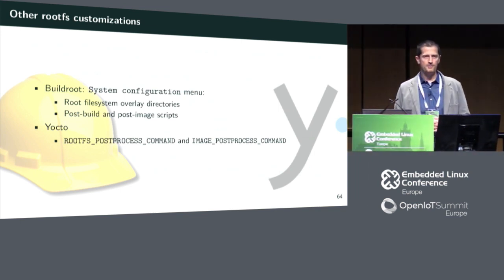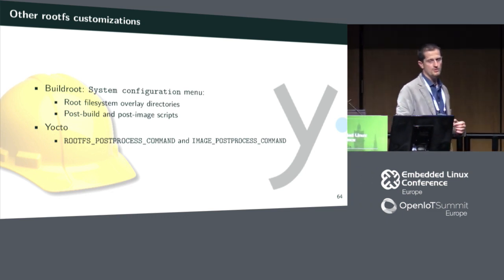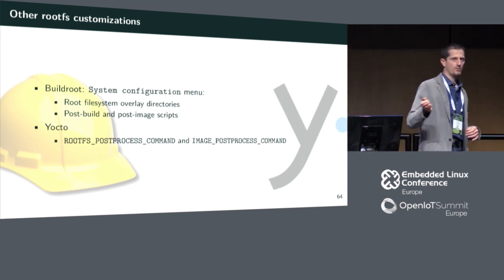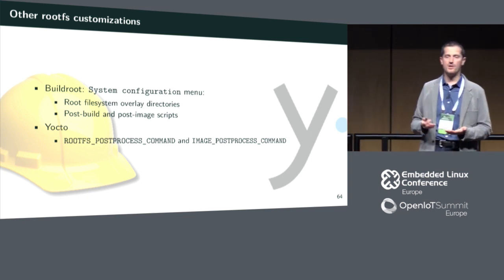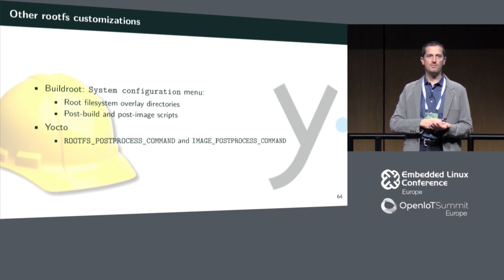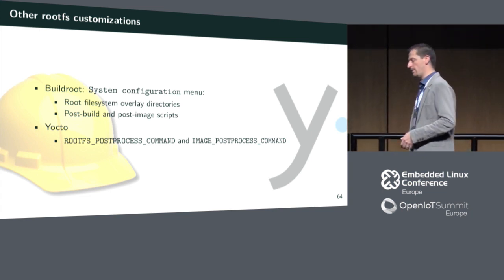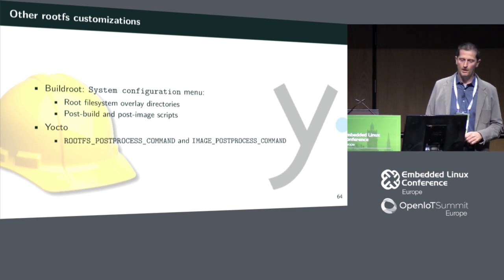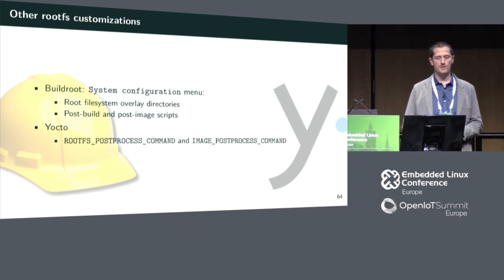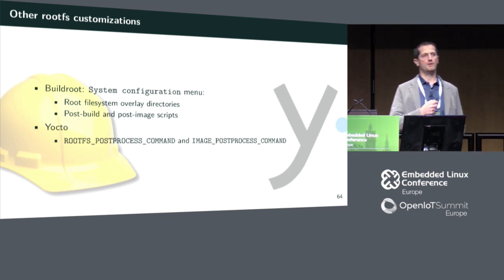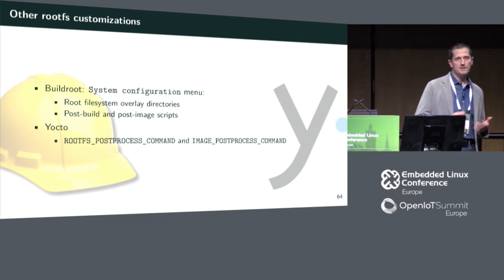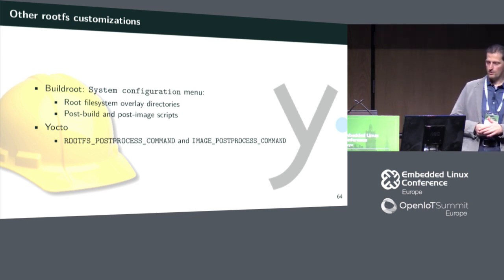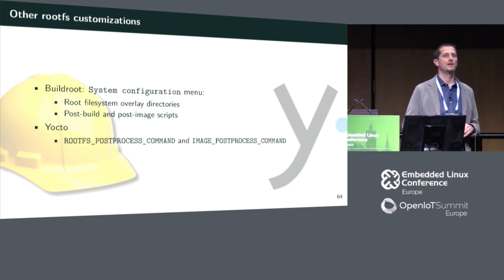If you need extra root file system or image modifications, Buildroot has two tools. One is the rootfs overlay directory: you give it one or more directories and at the end of rootfs creation it copies your overlay over the rootfs, typical for configuration files not specific to a package. If that's not enough, you can ask it to run a post-build or post-image script after each of those steps — it can be any program. The same thing can be done in Yocto with ROOTFS_POSTPROCESS_COMMAND and IMAGE_POSTPROCESS_COMMAND.